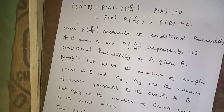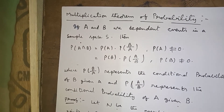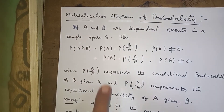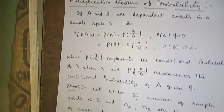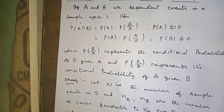Now the next one is the multiplication theorem of probability. If A and B are dependent events in a sample space S, we have to prove that P(A ∩ B) = P(A) · P(B | A), or equivalently, P(A ∩ B) = P(B) · P(A | B). Here P(B | A) and P(A | B) are conditional probabilities.